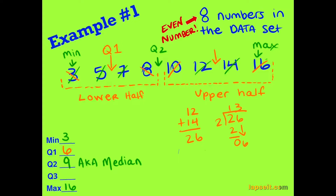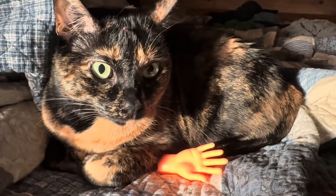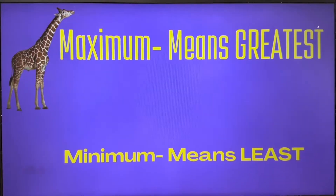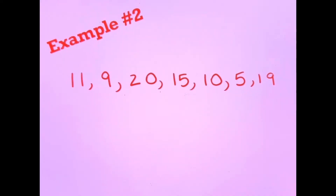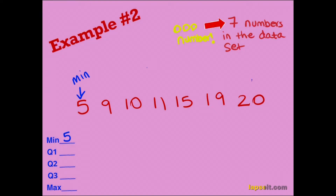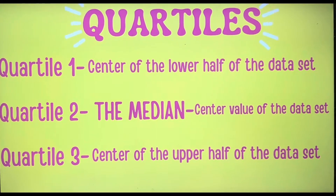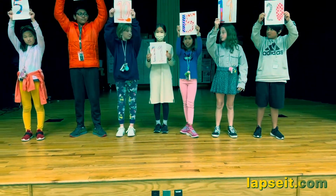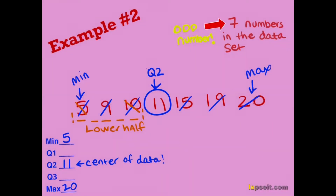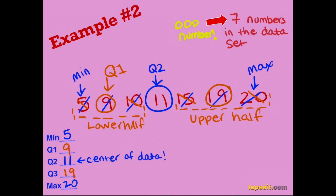Greatest. Least. The middle, the middle, the middle. The greatest. The least. The middle, the middle, the middle. Talk about the max and minimum. Put them in order before you begin. The min and the max are the numbers on each end. Greatest and least is what you mean when you say upper and lower extreme. Now let's talk about the quartiles. Gonna introduce you to quartile two. Its other name is median and here's what you do. Put them in order before you go. Find the middle value — it's the center, you know. Quartile one and three are more of the same. Middle of the bottom half, that's your aim. Middle of the top half. Let's all sing.